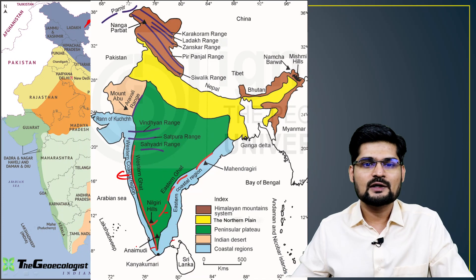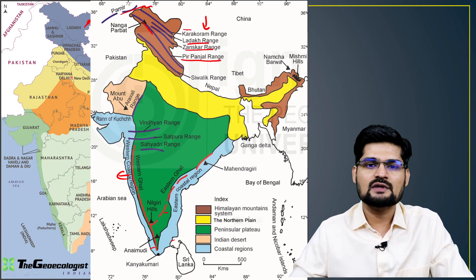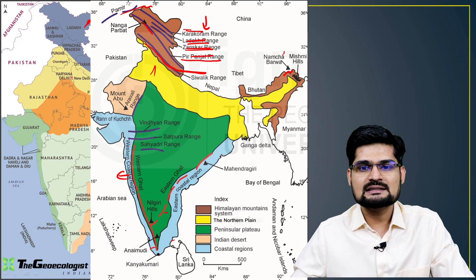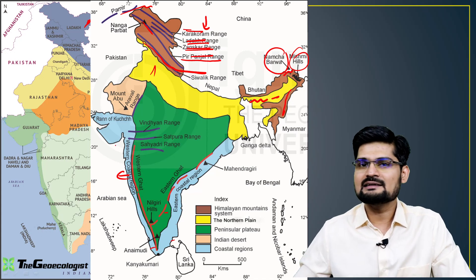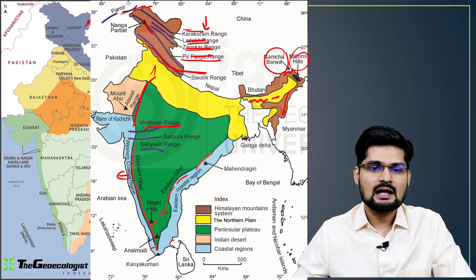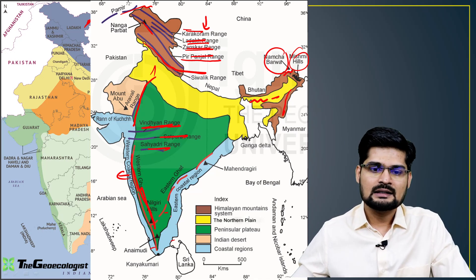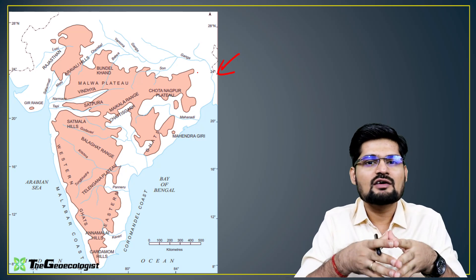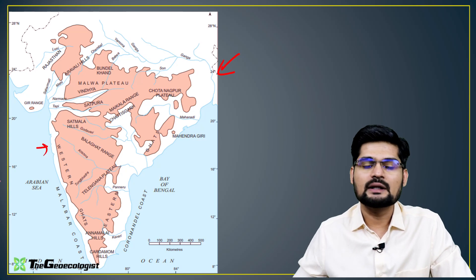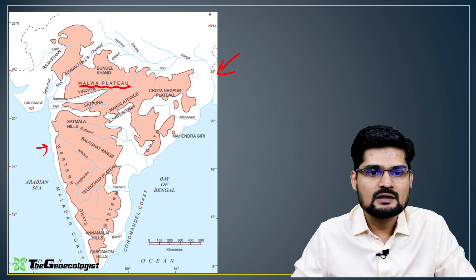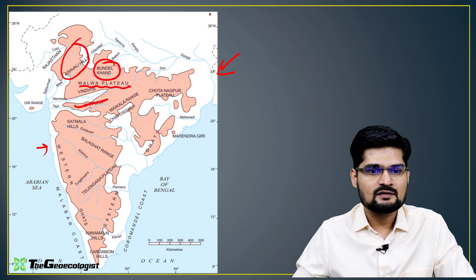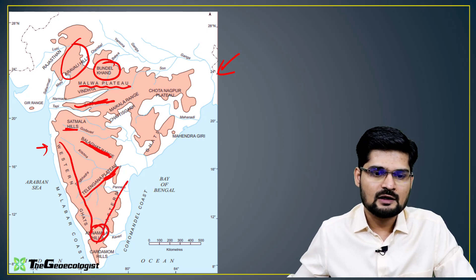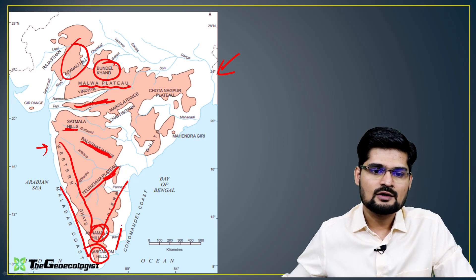In detail, from north to south, the Himalayan sequence includes Pamir, Karakoram, Ladakh, Zanskar, Pir Panjal, and the Shivaliks in the northwest, and Namcha Barwa, Mishmi Hills, Naga Hills, Garo-Khasi-Jaintia Hills in the northeast. Central India features the Aravalli Range, Vindhya-Satpura Range, Sahyadri/Western Ghats, and Eastern Coastal Plains. The Deccan Plateau results from Tertiary and Quaternary lava flows, with sub-regions including Malwa, Bundelkhand, Aravalli, Satpura, Satmala, Balaghat, Telangana Plateau, Western Ghats, Eastern Ghats, Annamalai, Nilgiris, and Cardamom Hills.